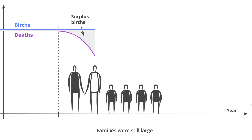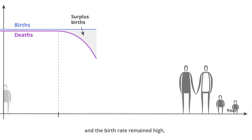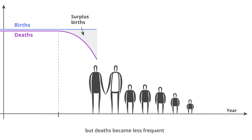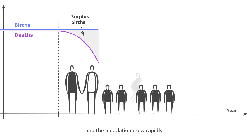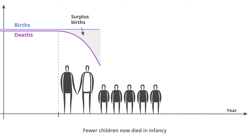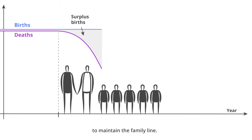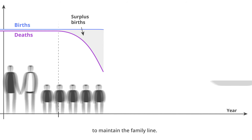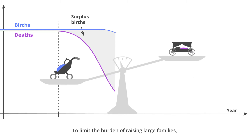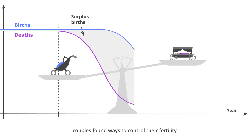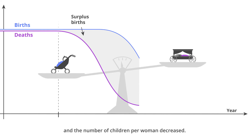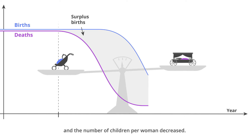Families were still large and the birth rate remained high, but deaths became less frequent and the population grew rapidly. Fewer children now died in infancy, and adults realized that fewer offspring were needed to maintain the family line. To limit the burden of raising large families, couples found ways to control their fertility and the number of children per woman decreased.